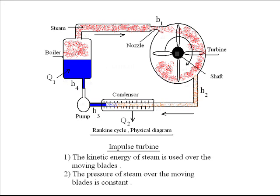This tangential push is transferred to the shaft, causing it to rotate. Two key facts about an impulse turbine: first, only the kinetic energy of steam is utilized to run the blades; second, the pressure of steam does not change over the moving blades. Now let us see a principal diagram of an axial-flow steam turbine.